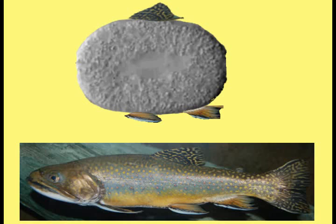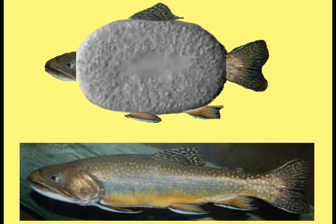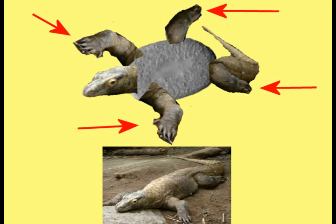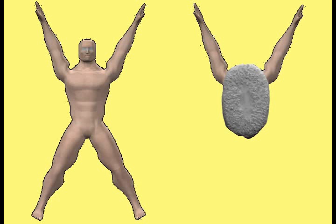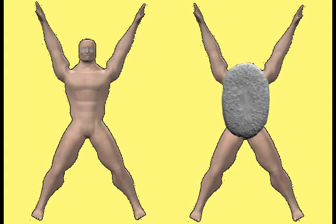A fish could be treated as a single cell with fins, a tail, and a head. A reptile could be treated as a single cell with four legs, a tail, and a head. The human body could be treated as a single cell with two arms, two legs, and a head.